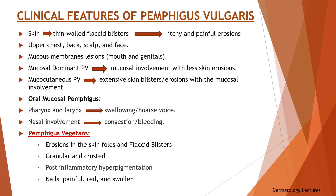Now we will discuss clinical features of pemphigus vulgaris. Skin lesions appear as thin-walled flaccid blisters filled with clear fluid that easily rupture, causing itching and painful erosions. They most often arise on the upper chest, back, scalp and face. Most patients first present with lesions on the mucous membranes such as the mouth and genitals. Blisters usually develop on the skin after a few weeks or months, although in some cases mucosal lesions may be the only manifestation.